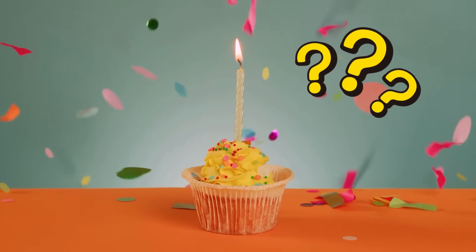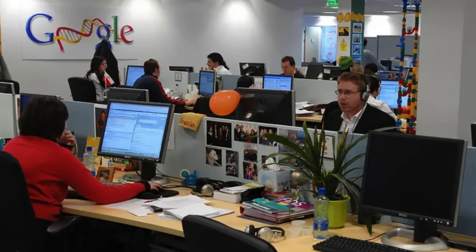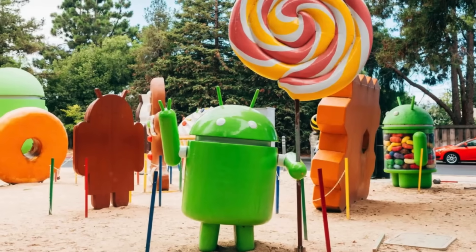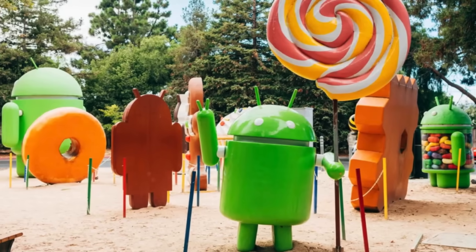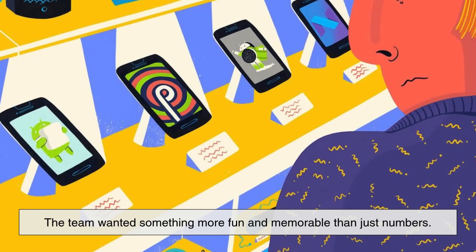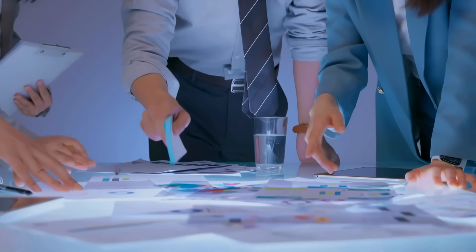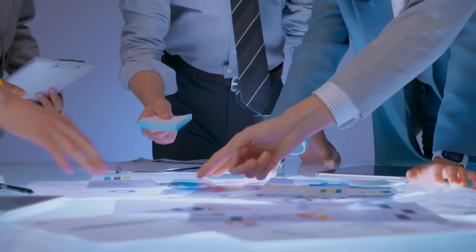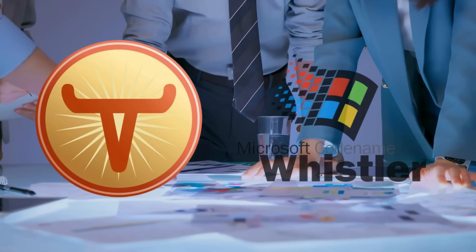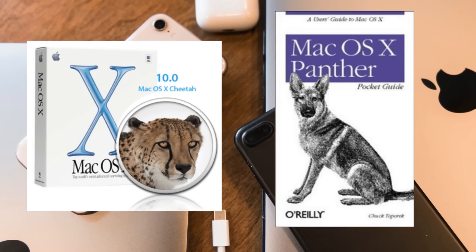So why Cupcake? According to Google engineers, naming software versions after desserts was originally an inside joke within the Android development team. The team wanted something more fun and memorable than just numbers. At the time, tech companies often used code names for their software projects. Microsoft had Longhorn and Whistler, and Apple used names like Cheetah and Panther for MacOS.